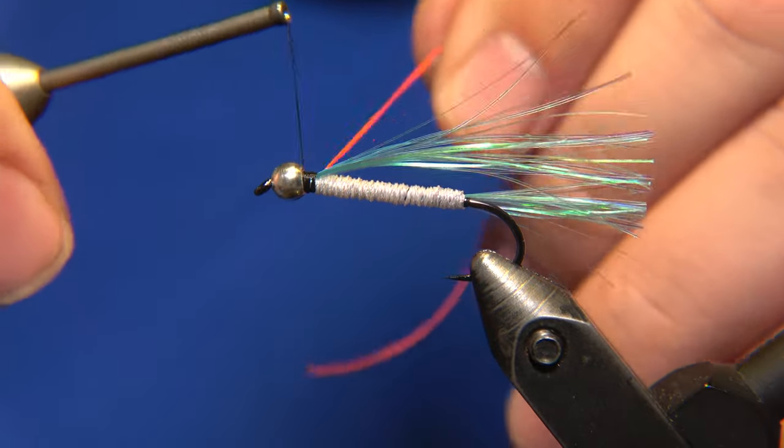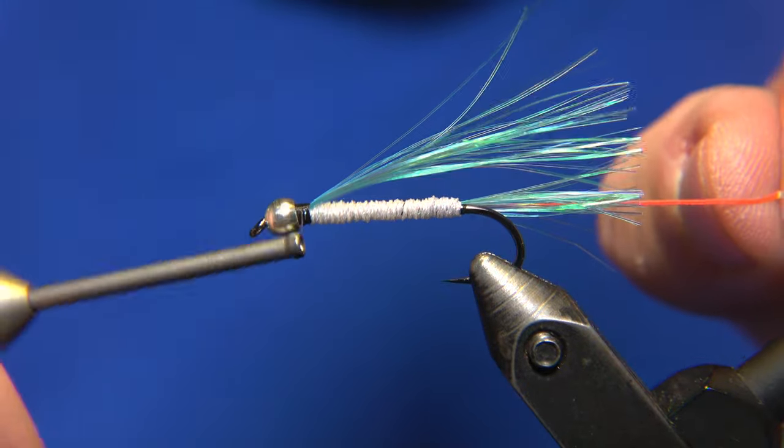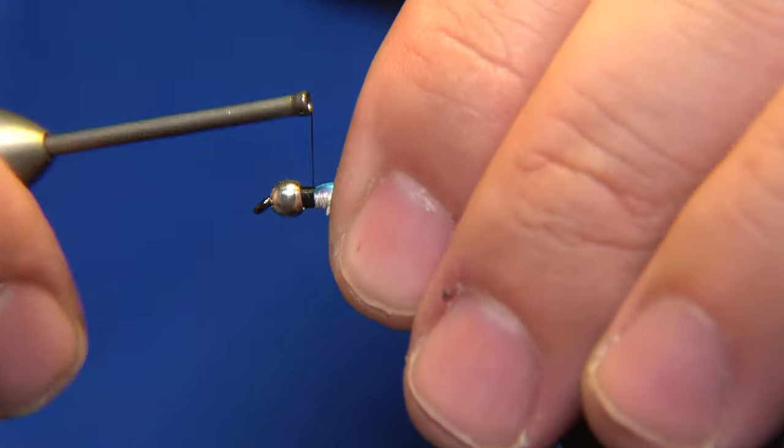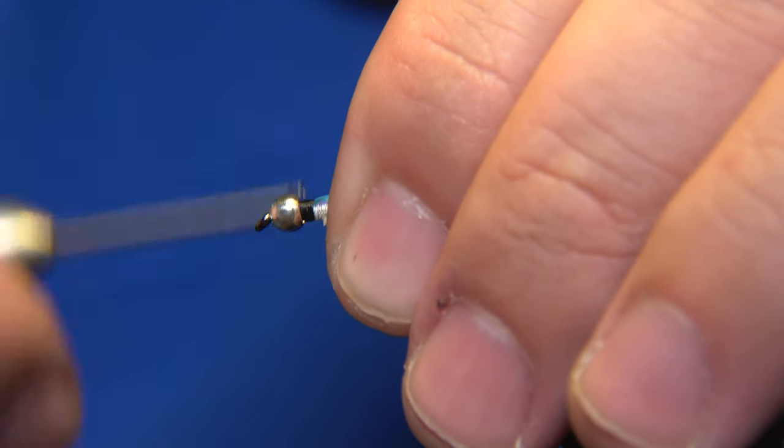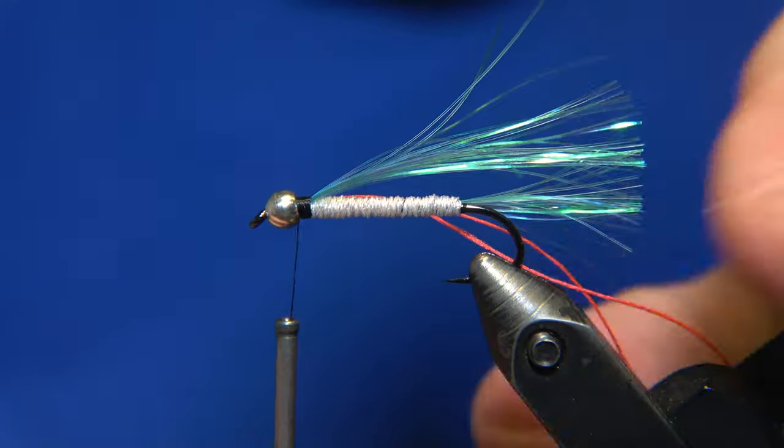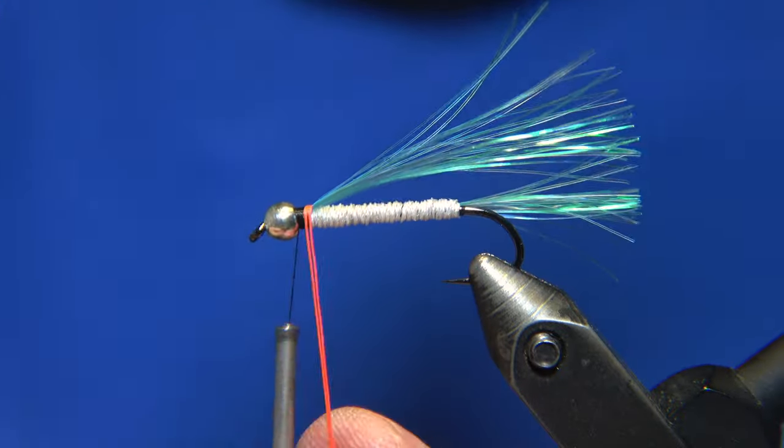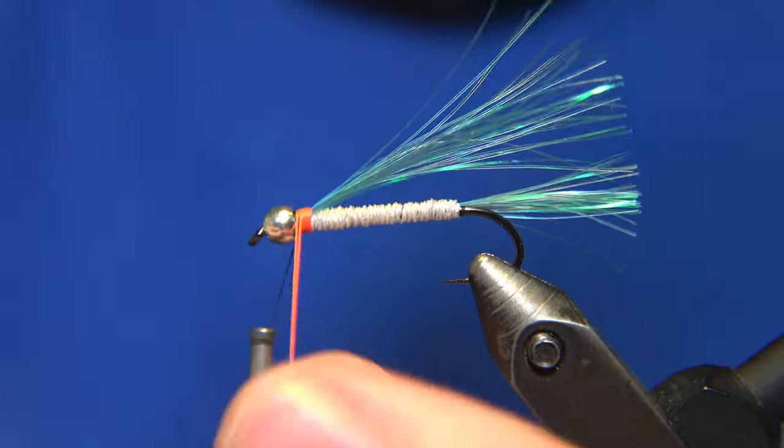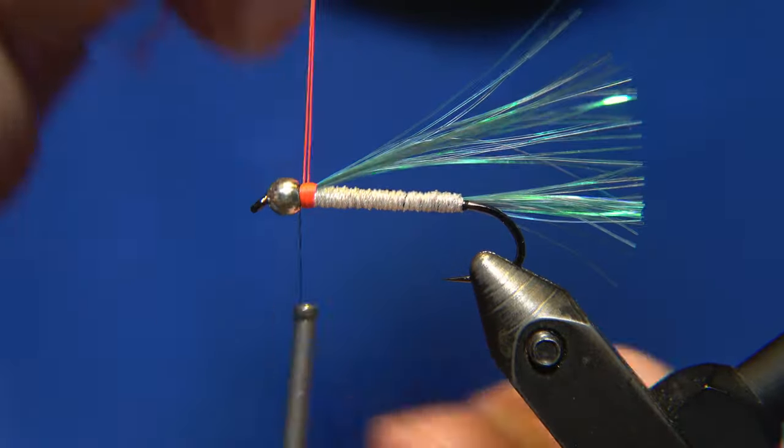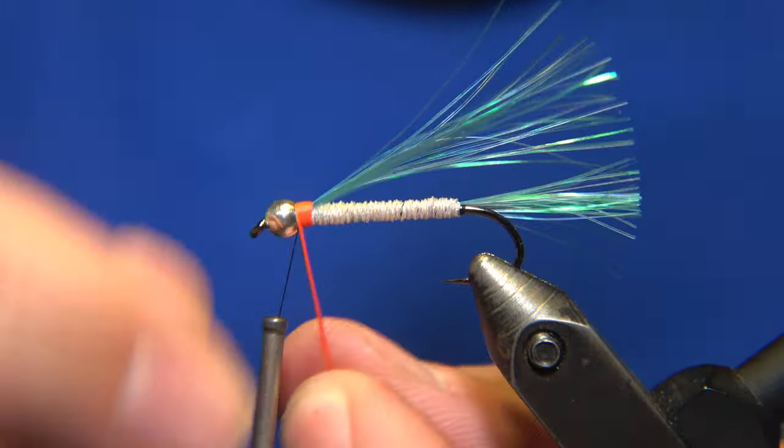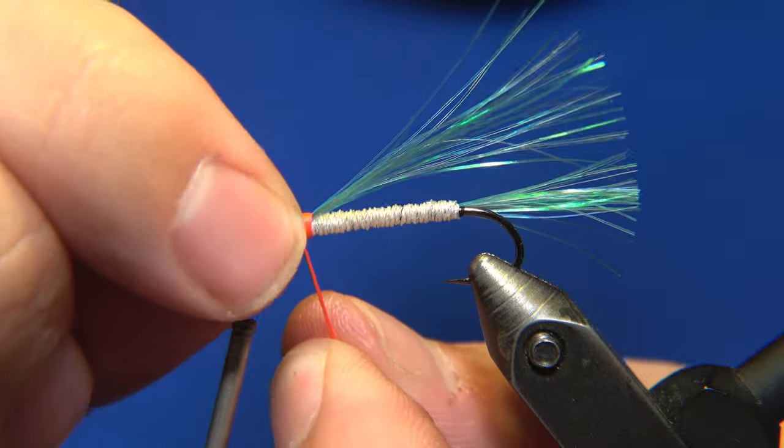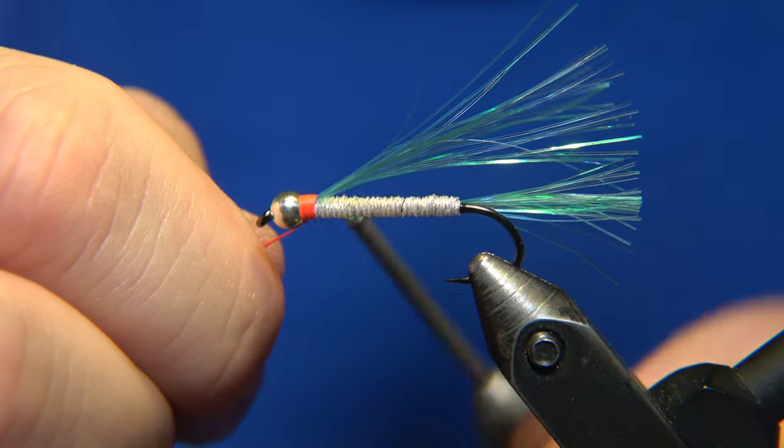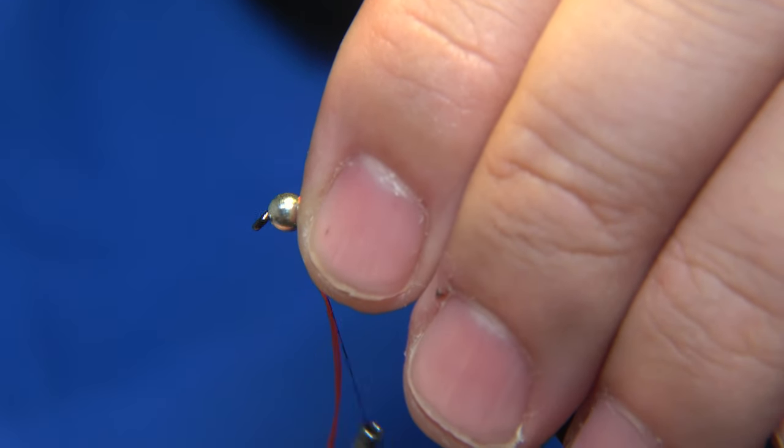I decided to add a hot spot for it, just in the front. That will be using a red globe brite for that one. We'll create a little platform for it with our thread. Then we start to wrap this forward. You can see what it does for the fly. This globe brite is UV reflective as well. It gives the fly this look I like a lot, and the fish likes it a lot too.